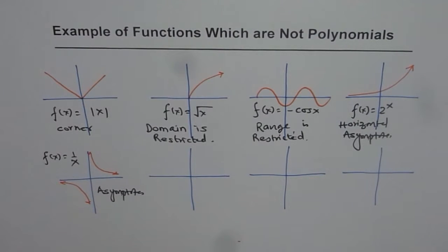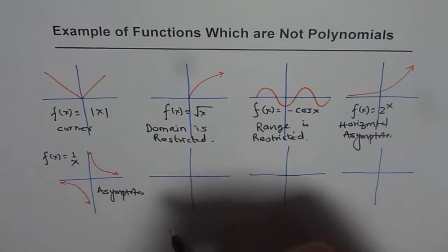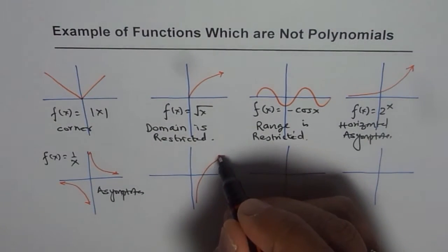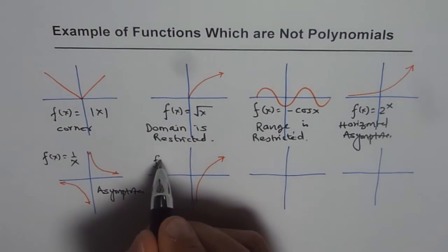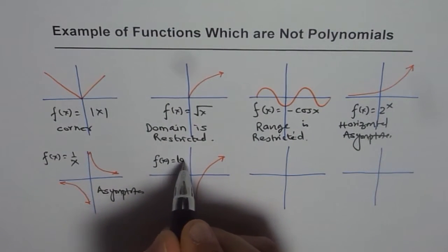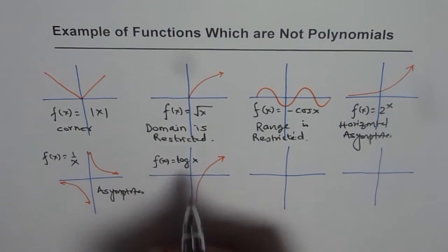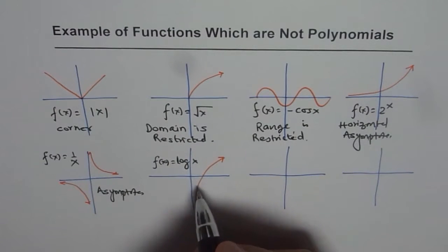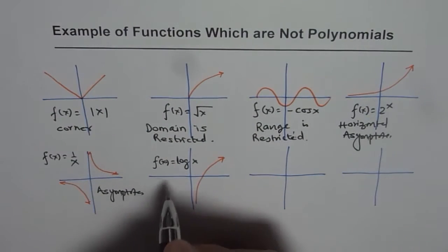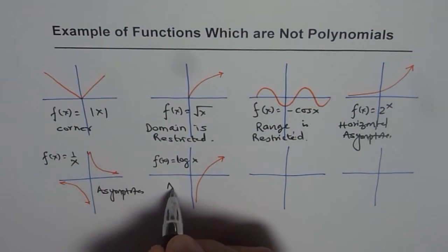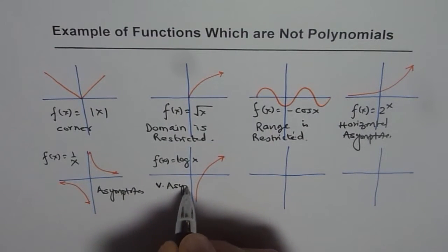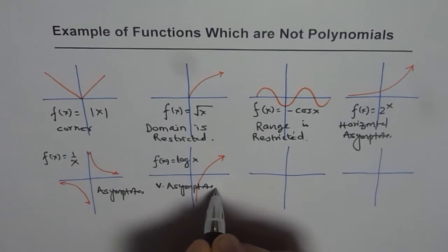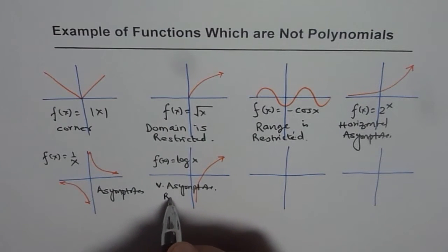We can also have a logarithmic function like f(x) = log(x). It has a vertical asymptote and a restricted domain. So one reason it is not a polynomial is the vertical asymptote, and the other reason is the restricted domain.